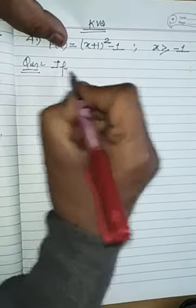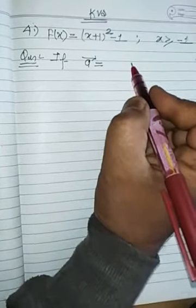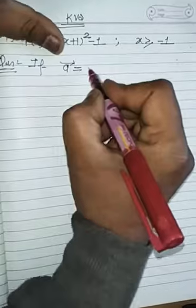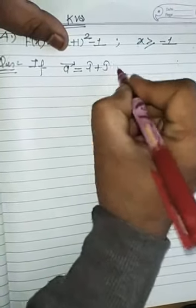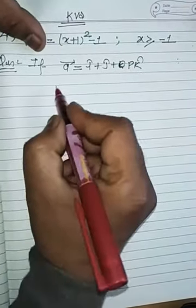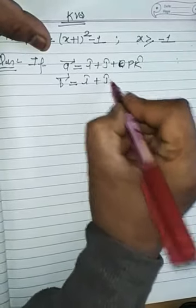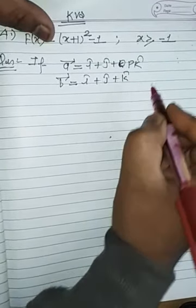If we have given a vector A equals to i cap plus j cap plus P k cap, and vector B equals to i cap plus j cap plus k cap. We have given two vectors.